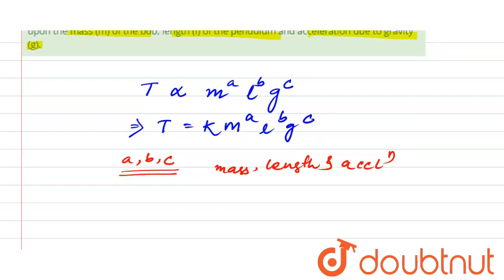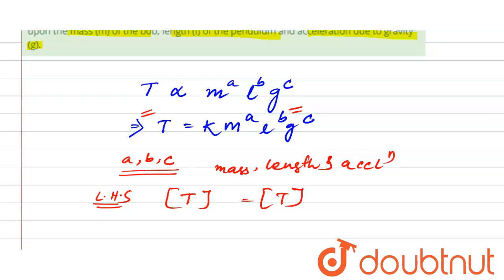Now, writing the dimensional formula of different quantities appearing on both sides of the equation. On the left-hand side, the time period T has the dimensional formula T to the power 1, which is simply [T].